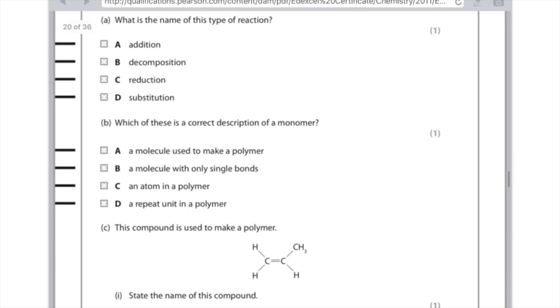Which of these is the correct description of a monomer? A molecule used to make a polymer. A molecule with only single bonds, that's irrelevant. An atom in a polymer, no, because an atom is literally just one tiny little atom. Or a repeat unit in a polymer. It's quite tricky. For me, I'd be erring between A and D, but the answer is actually A. It's a molecule used to make a polymer.